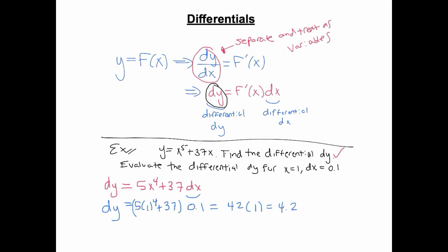So what that tells me is, if we view this function y equals x to the fifth plus 37x, I'm at the point x equals 1, which means I'm at (1, 38).